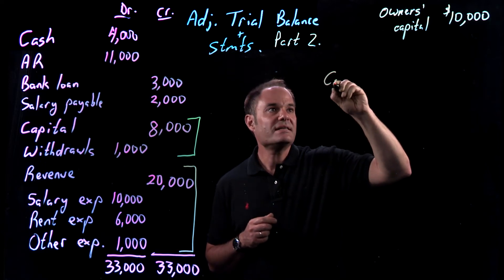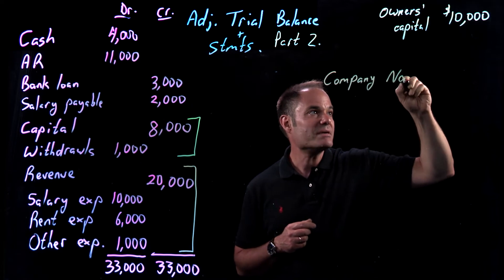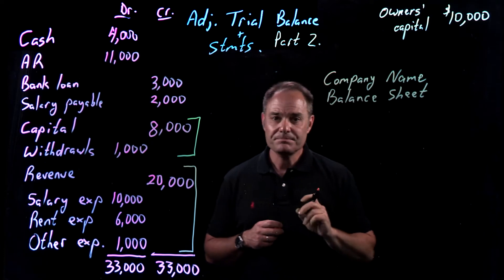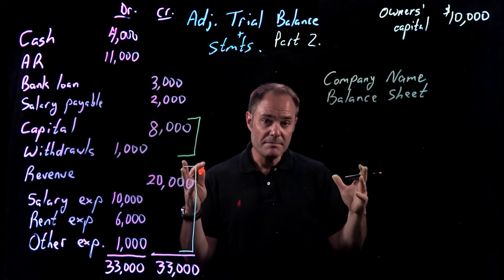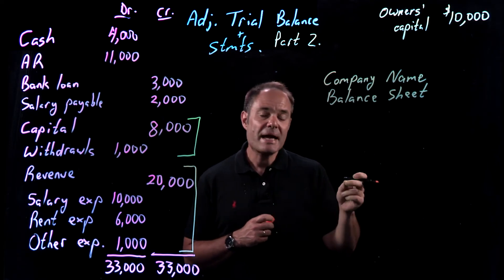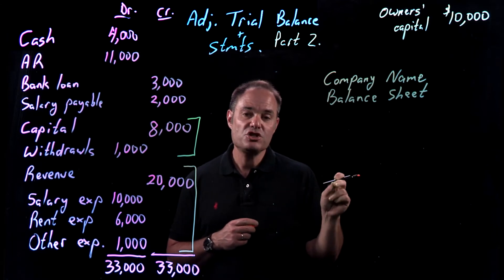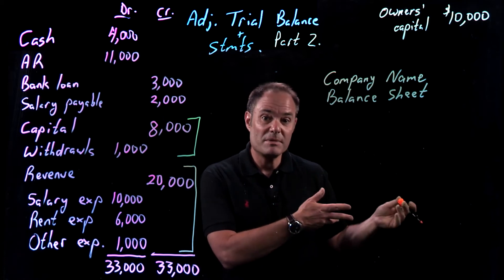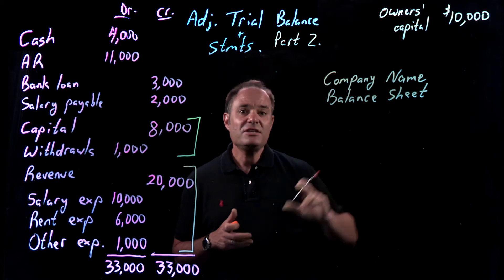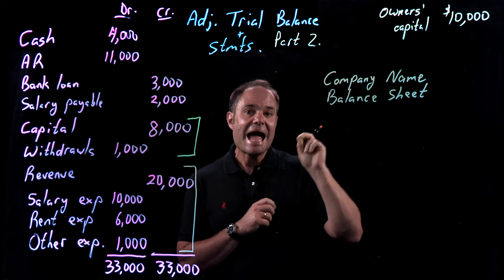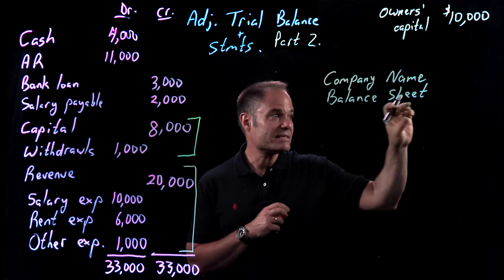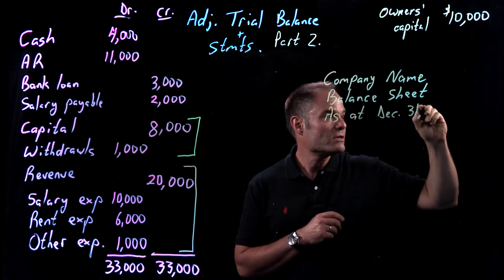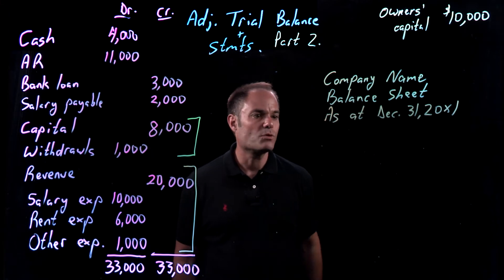Once again, we need the company name — I didn't name this company, so we'll just put 'company name.' We should get into the habit of always doing that, and then the title: balance sheet. Unlike the income statement or the statement of owner's equity, which covered a period of time, a balance sheet is only good for one day — one moment in time. Think of your bank account: if I ask you how much cash was in your account last year, that doesn't really make much sense because it depends on what day. On one day there may have been a lot of cash; on another day, maybe right after Christmas, there wasn't very much. A balance sheet, because it represents accounts that vary from day to day, has to be as at a particular date — I'm going to write 'as at December 31, 20X1,' which drives home that notion that this is for one day and one day only.